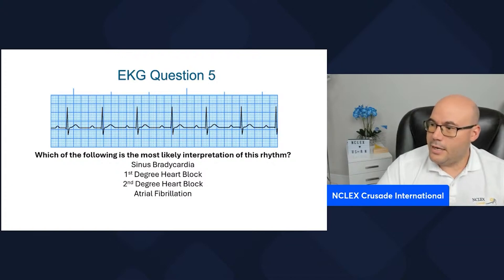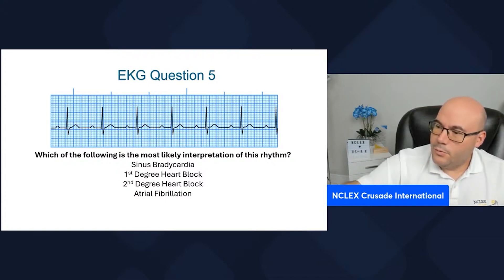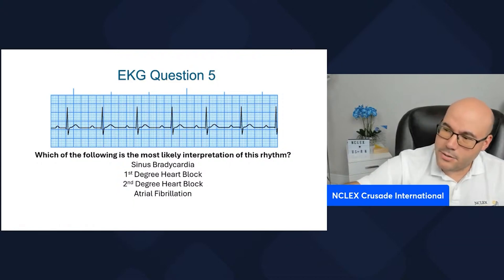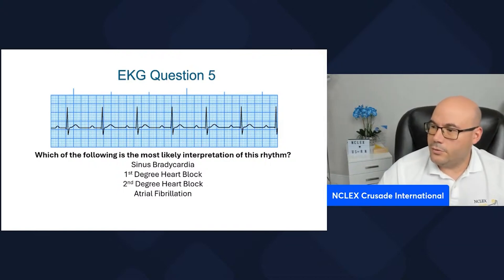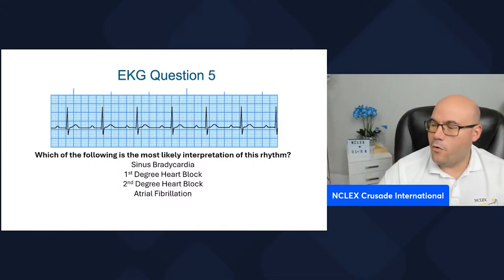So let's see. We have one, two, three big squares, four little squares, and four little squares on the other side. So one, two, three, and four little squares on the left and four little squares on the right.